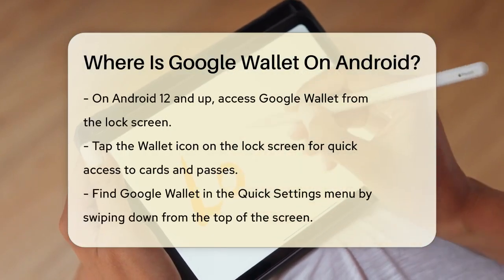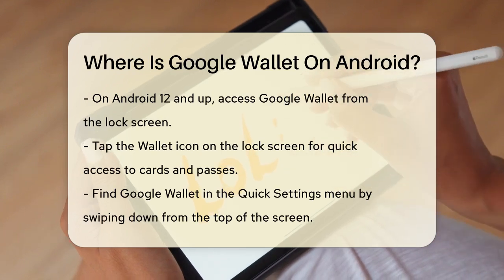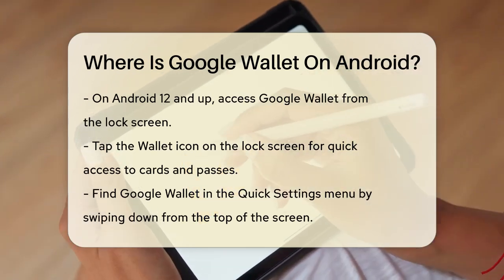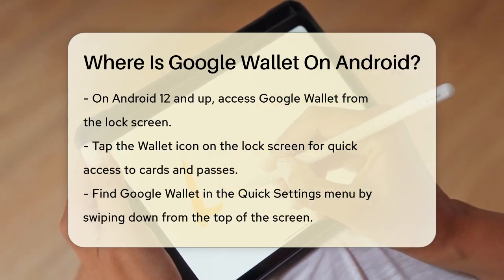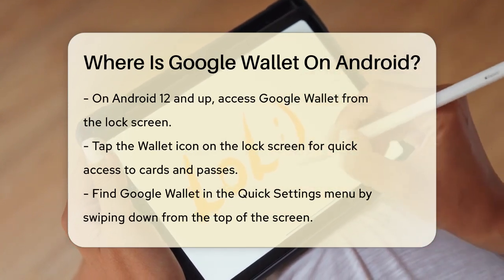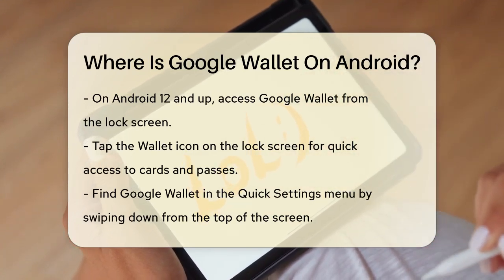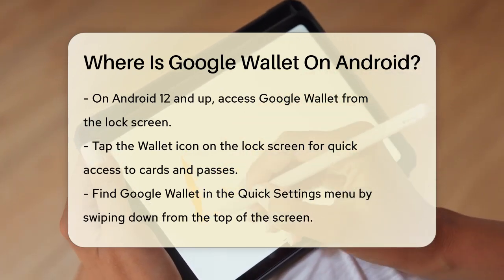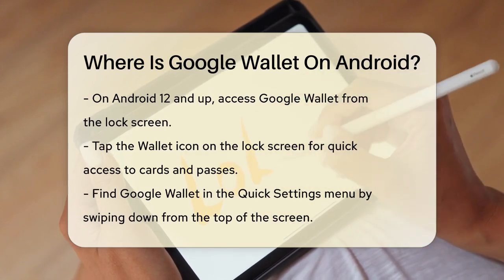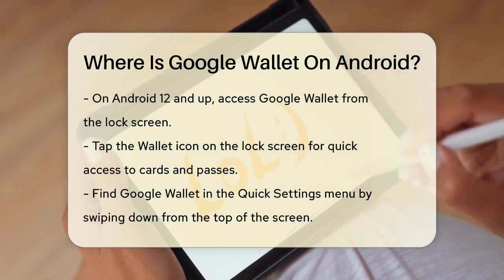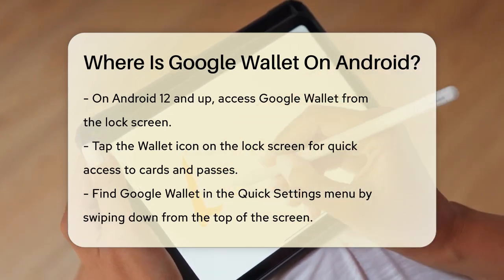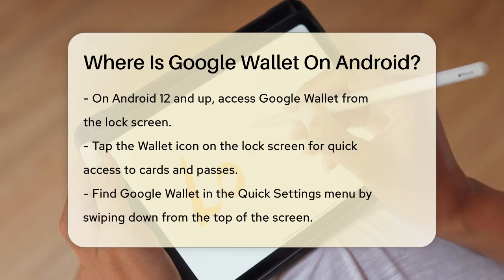Another convenient way to access Google Wallet is through your phone's lock screen, but this feature is only available on devices running Android 12 and up. If your device supports it, you can tap the Wallet icon at the bottom right of your lock screen to quickly access your cards, passes, and IDs.